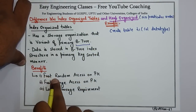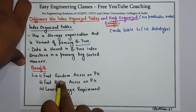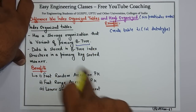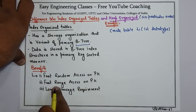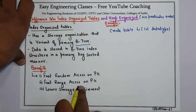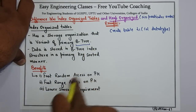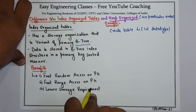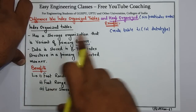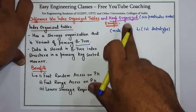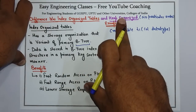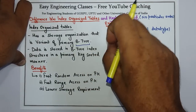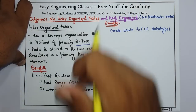The benefits of index organized tables are: fast random access on primary key, fast range access on primary key, and lower storage requirement. So it is better than heap organized or regular tables in these aspects.